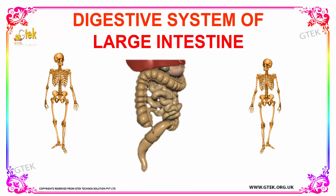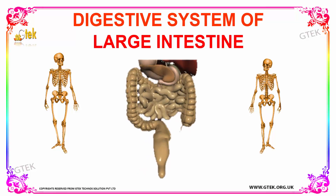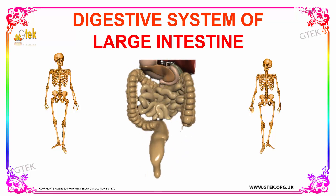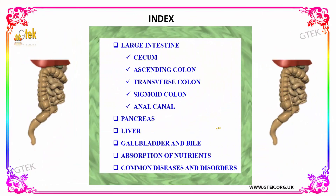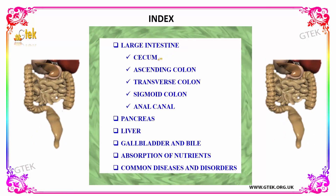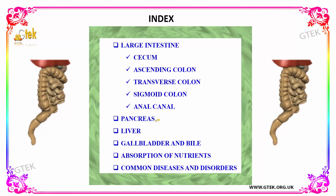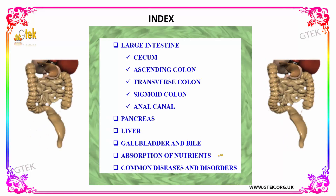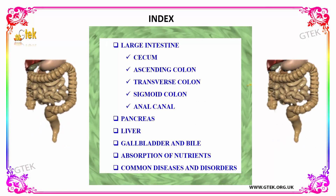Hello everyone, welcome to Gtech Techno Solution Private Limited. Today we are going to discuss the digestive system of a human and how the large intestine helps in digestion. We are going to cover the large intestine and its parts in detail, including the ascending colon, transverse colon, sigmoid colon, and anal canal, followed by the pancreas, liver, gallbladder and bile, absorption of nutrients, and common diseases and disorders.